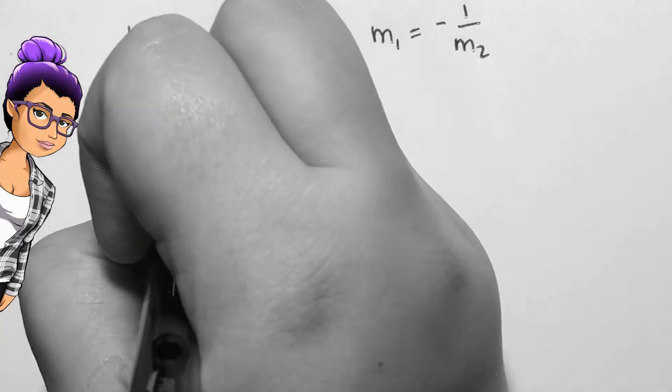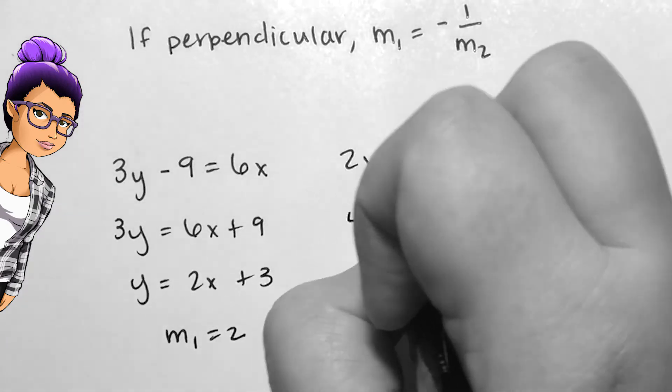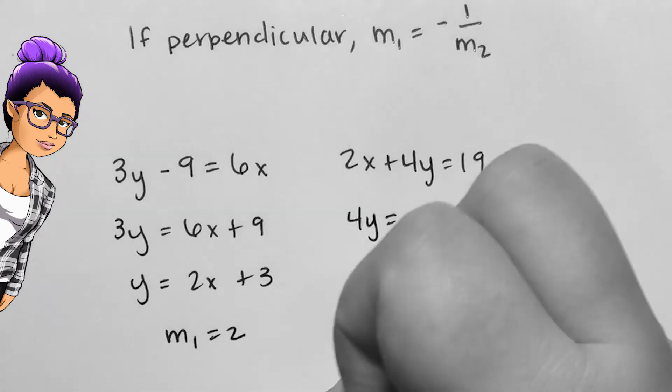The pair of lines 3y minus 9 equals 6x and 2x plus 4y equals 19 are perpendicular.